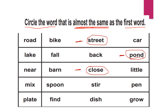The fourth word is 'mix.' Mix means to stir — to mix with the help of a spoon. That is mixing. So the meaning of mix is 'stir.' We will circle stir here.